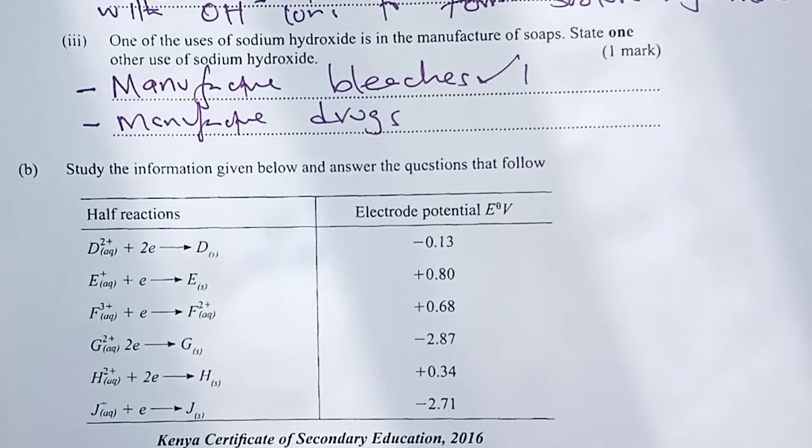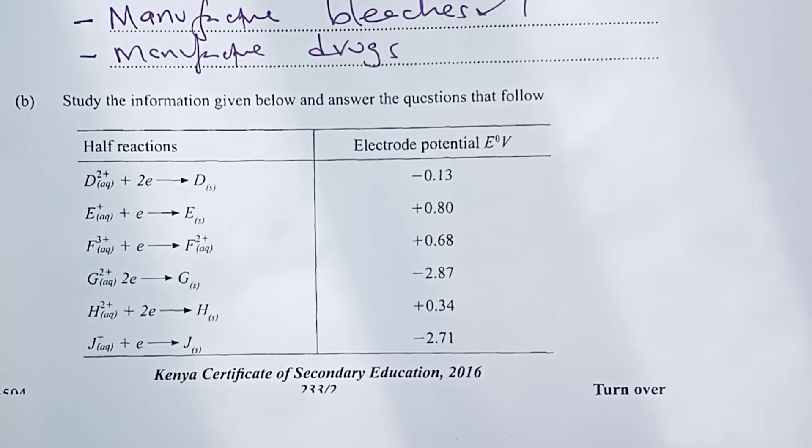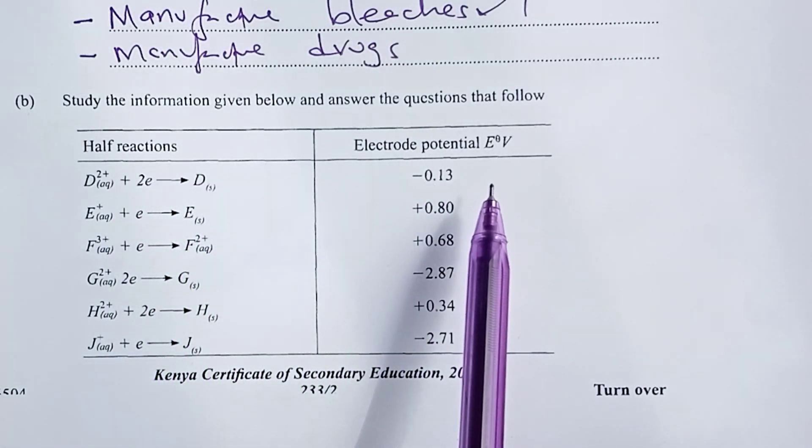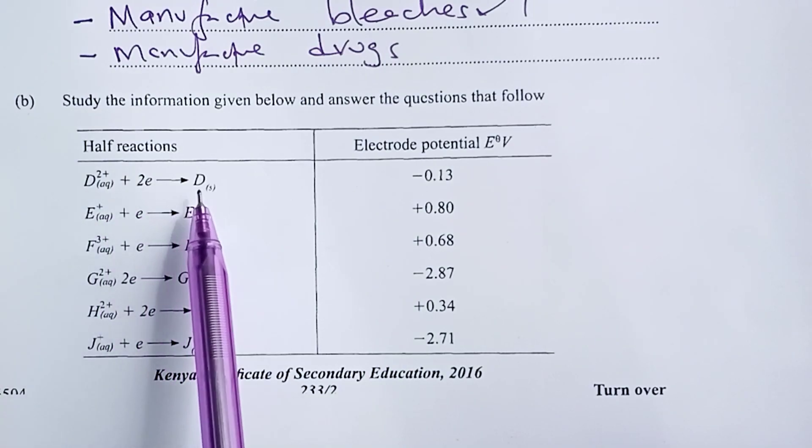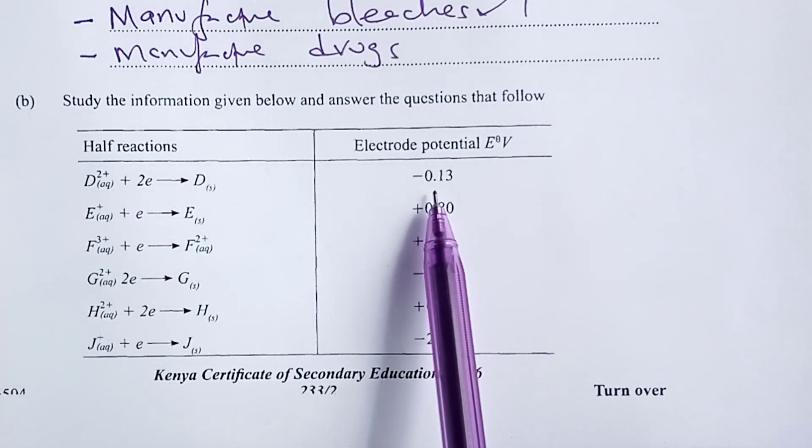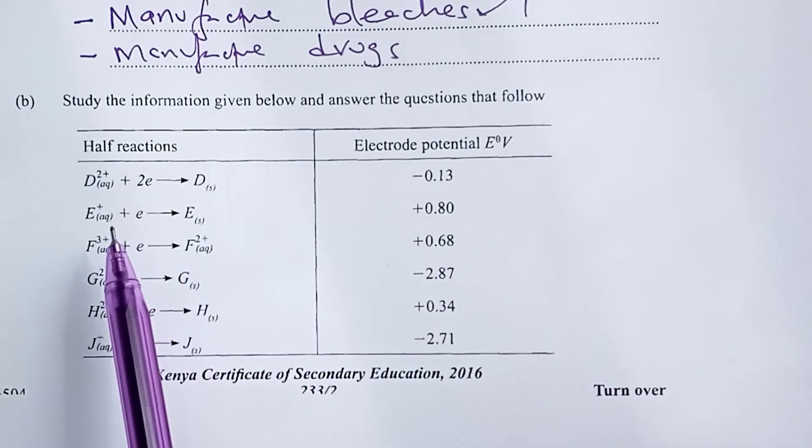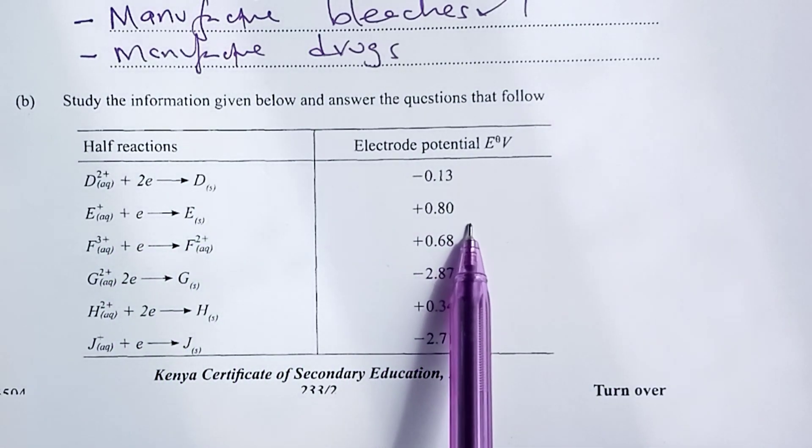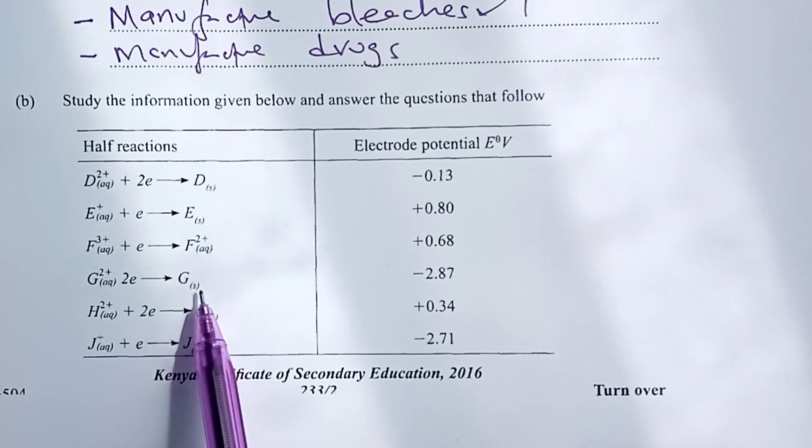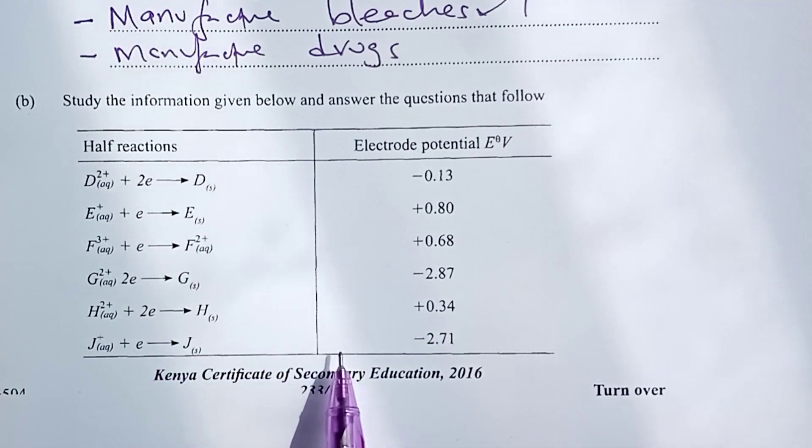For part B, we are told to study the information given in the table below and answer the questions that follow. So, here, we have half reactions and the electrode potential. So, for D ions, accepting two electrons to form D solid, the E naught value is negative 0.13. For E positive 0.80, F we have positive 0.68, G negative 2.87, H positive 0.34, and finally, J negative 2.71.